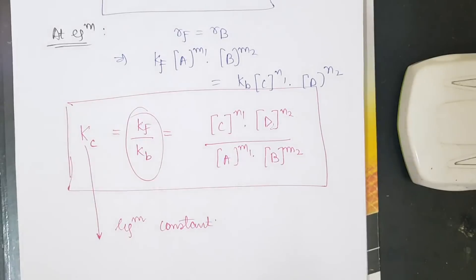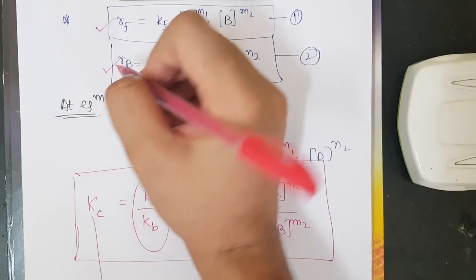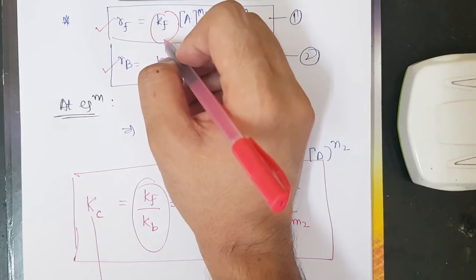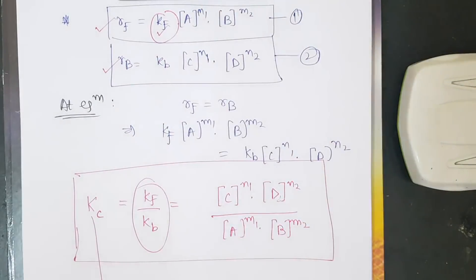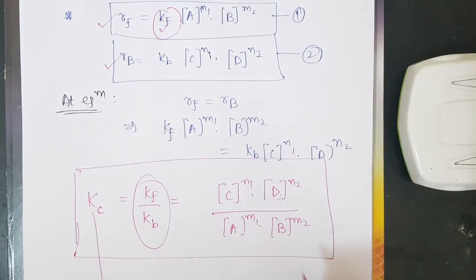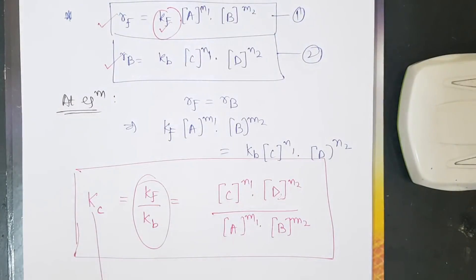This relation between kf, kb, and Kc is important — questions in coaching institutes and JEE Advanced have been directly asked based on it, such as finding the rate constant of the forward reaction. Please understand this derivation well. If you have doubts, ask in the comment section. Also check out my organic chemistry and mathematics courses on Unacademy — they are completely free. Thank you and all the best.